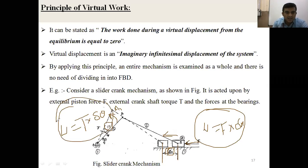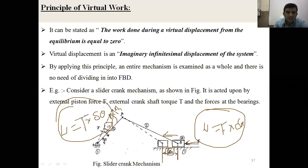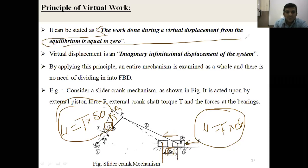There are two work done by the system: work done by the slider and work done by the crank. The remaining work done at joints O, A, B is zero because there is no displacement. Total work done equals work done at slider plus work done at crank, which equals zero, according to the principle of virtual work: work done during virtual displacement from equilibrium equals zero.